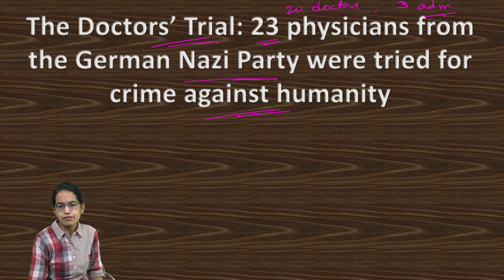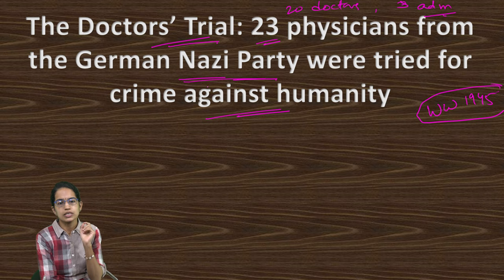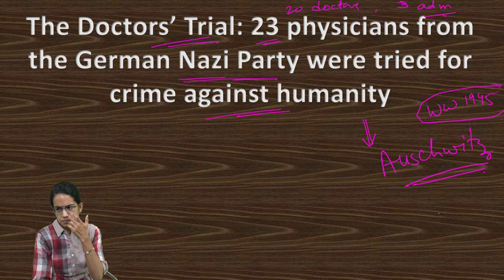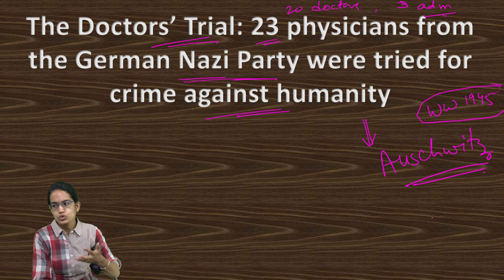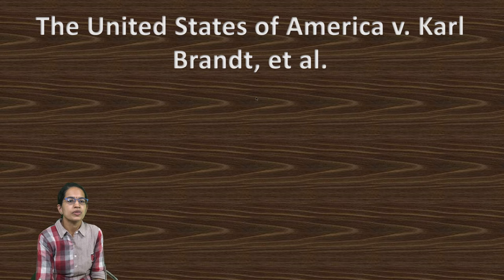When World War II ended in 1945, all the allied powers who achieved victory started this trial against the German Nazi party physicians. The claim was that these doctors and administrators were using people from the Auschwitz concentration camp for their studies. The way in which these humans were used was dehumanizing, and numerous Jewish prisoners were part of this project. The case was the United States of America versus Karl Brandt, known as the Doctor's Trial.